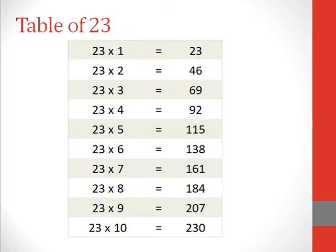Table of 23. 23 1s are 23, 23 2s are 46, 23 3s are 69, 23 4s are 92, 23 5s are 115.